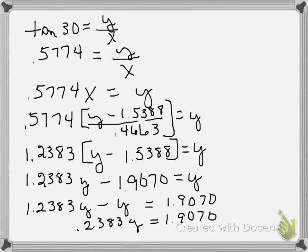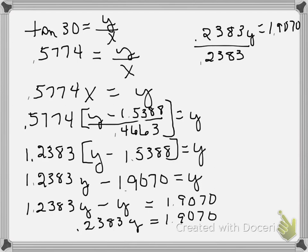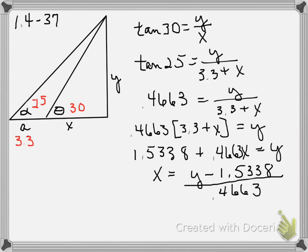0.2383y equals 1.9070. Dividing both sides by 0.2383, we get y equals 8.9070. So the height of the mountain is 8.90 to the nearest decimal place. I could calculate x if needed, but we were only asked to find the height of the mountain.